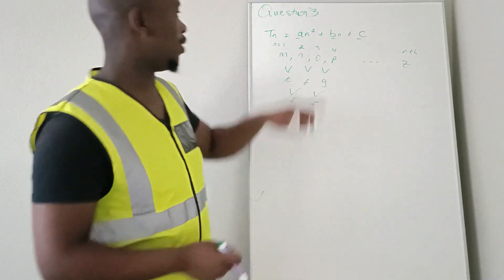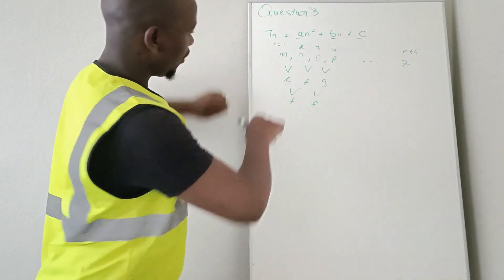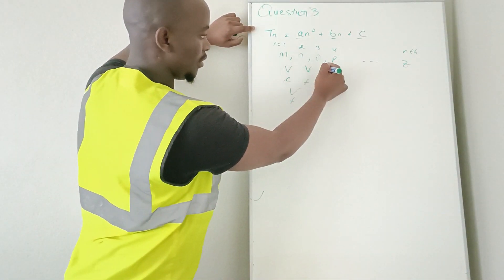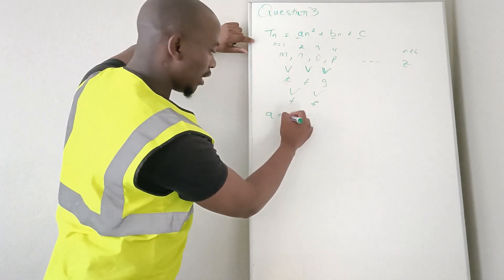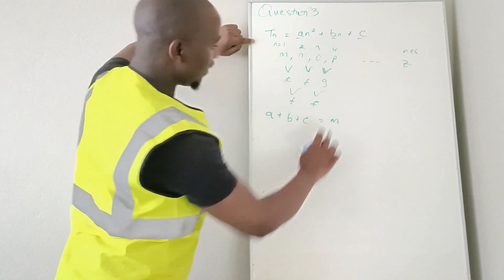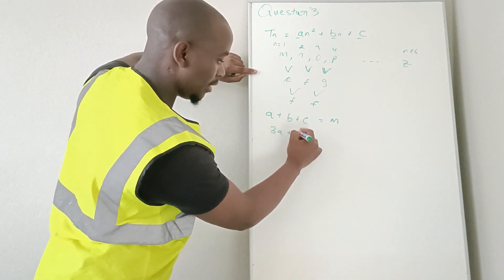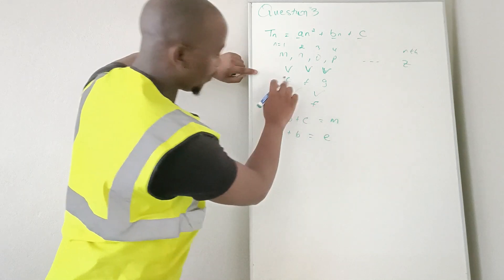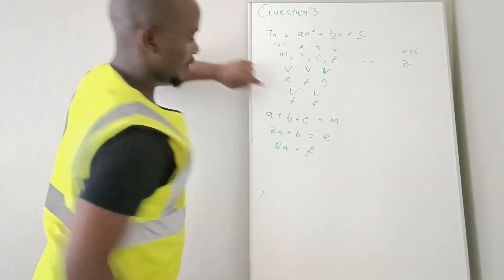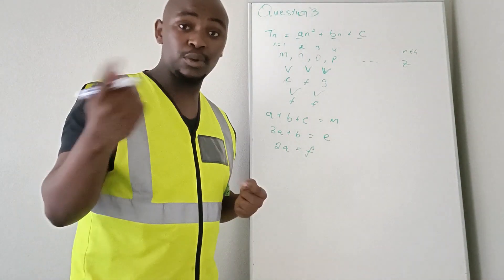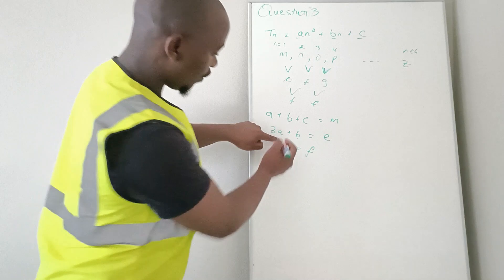We are asked to show that p equals 4. For a quadratic pattern, to find the first term we use a + b + c. To find the first term of the first difference we use 3a + b = e. To find the second difference we use 2a. We need to find the value of a first.